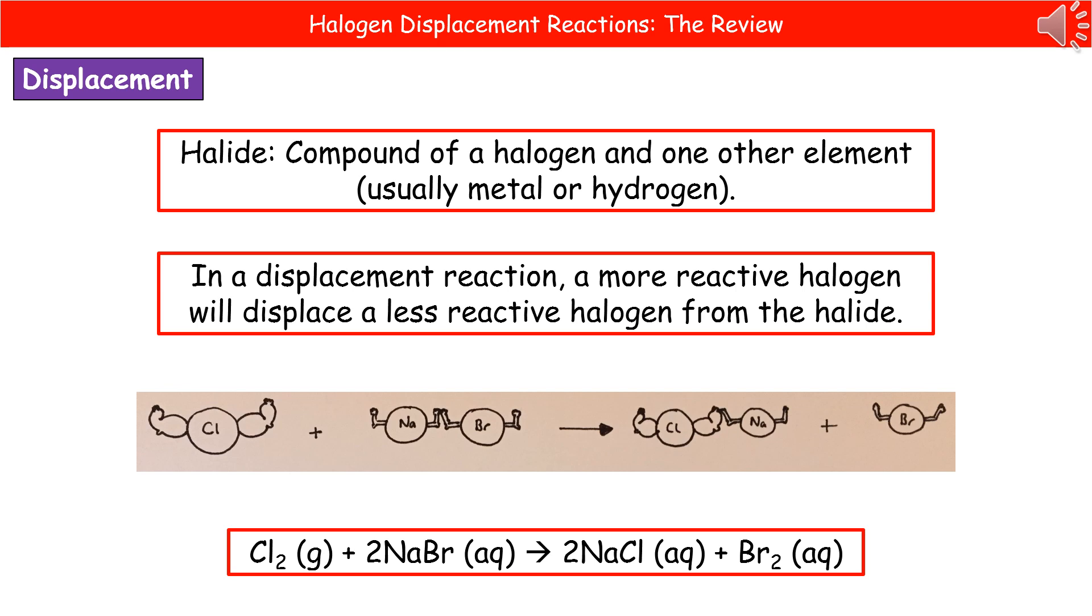Therefore, it's going to take its place with the sodium. So what we end up doing on the other side is we've got chlorine joined with sodium to make sodium chloride, and we've got our bromine on its own.